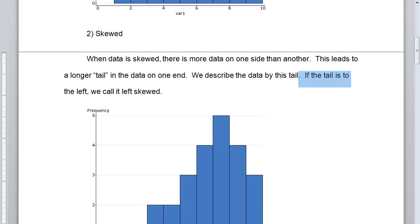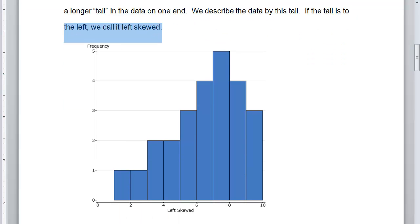If the tail is to the left, we call it left skewed. Hopefully that seems pretty intuitive. And so here, it looks like this is the mode. The median is probably right around here. And what's happening is I'm going up, but I've got this much longer tail off to the left.